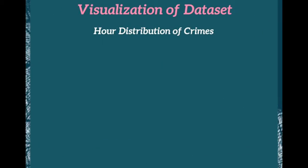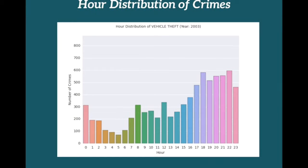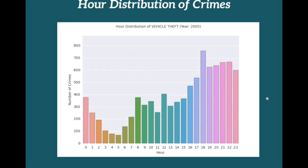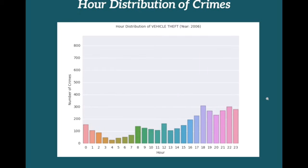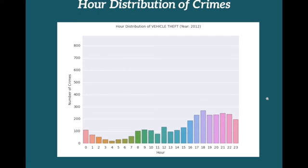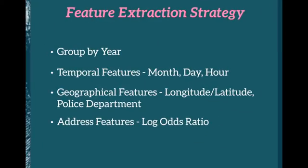This is the year distribution of crimes. For vehicle theft, from 2003 to 2005 there is an increasing trend, but it drops dramatically from 2005 to 2006. In addition, vehicle theft most often happens in the afternoon or evening, but rarely occurs around 4 or 5 a.m.